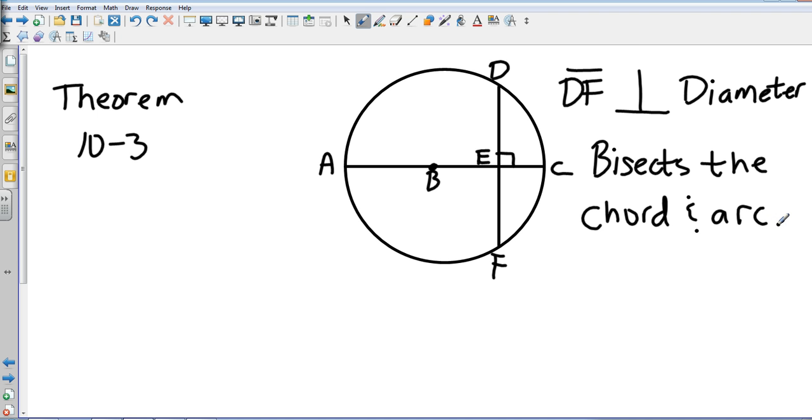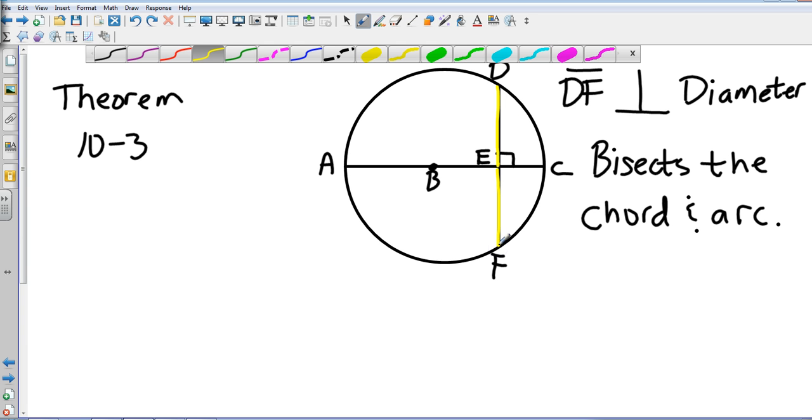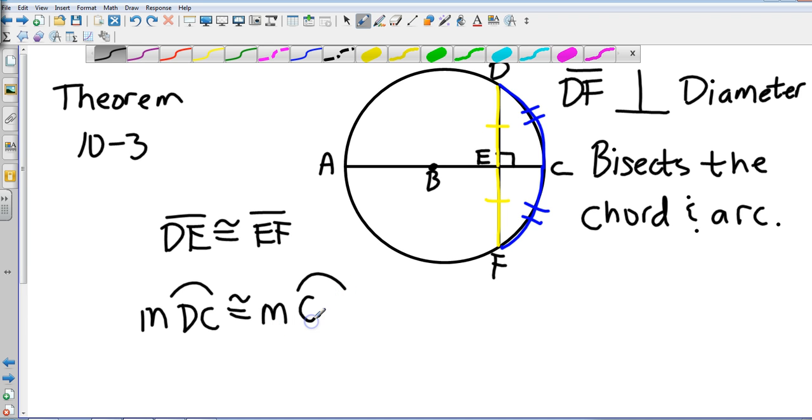Which means two things. DE is congruent to EF—those two segments are congruent. And it also means that arc DC is congruent to arc FC. Let me write this out. DE is congruent to EF. Obviously, angle DEC and angle CEF are both 90 degrees, so the measure of arc DC is congruent to the measure of arc CF. Those would be exactly the same. That's theorem 10-3.